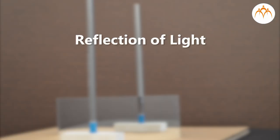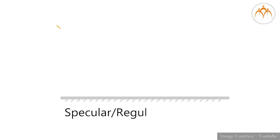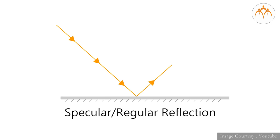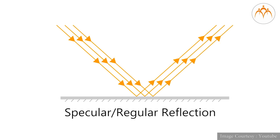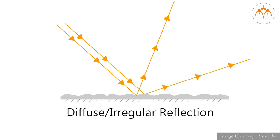The reflection of light can be roughly categorised into two types. Specular reflection, or regular reflection, is defined as light reflected from a smooth surface at a definite angle. Diffuse reflection, or irregular reflection, is produced by a rough surface that tends to reflect light in all directions.